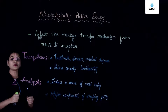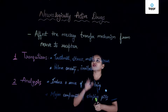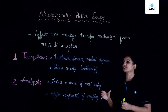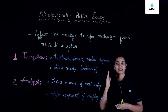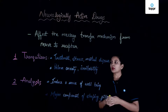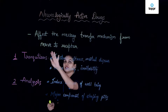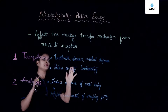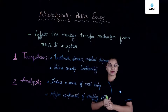Hey guys! Now we are going to learn about another category of drugs which we call as neurologically active drugs. As the name suggests, they are neurologically active, meaning that they affect the central nervous system of our body. They affect the message transfer mechanism from the nerve to the receptor — that is the main mechanism of how these work.